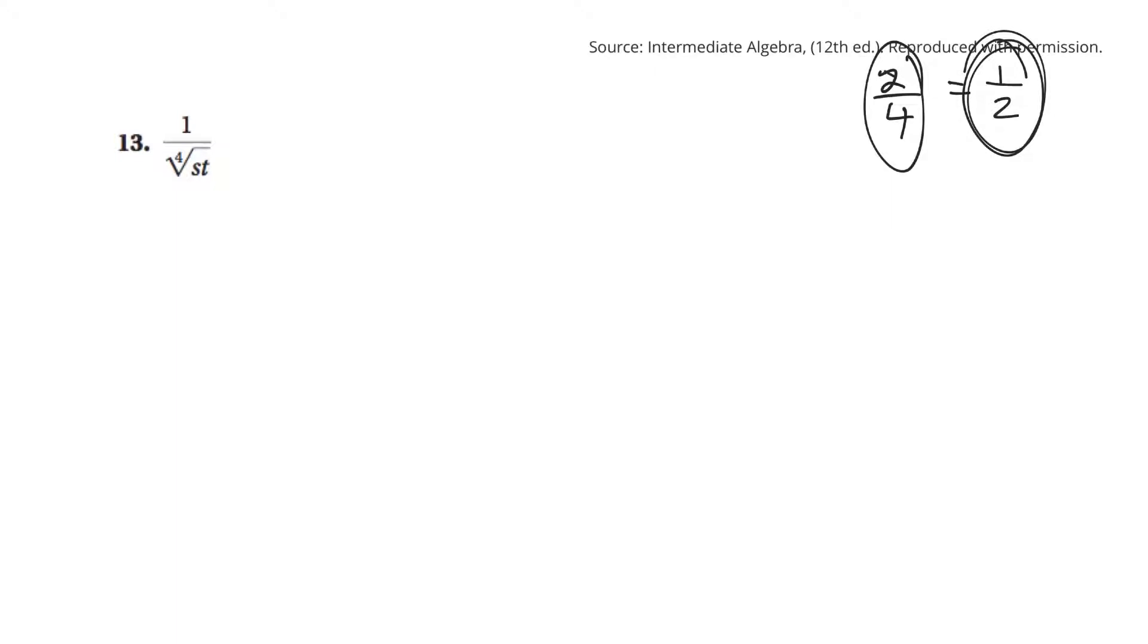Now, if I just have, say, something like 2 over root 5, and I wanted to rationalize that denominator, I could multiply it by root 5 on the bottom and the top. And so, on the top, I'll get root 2 root 5. On the bottom, I get the square root of 25.